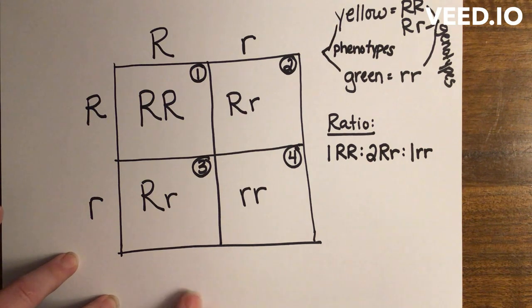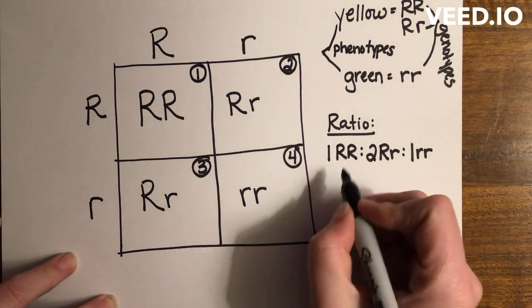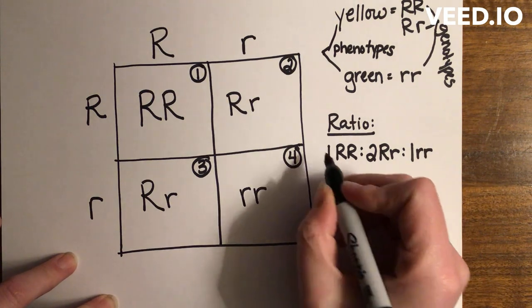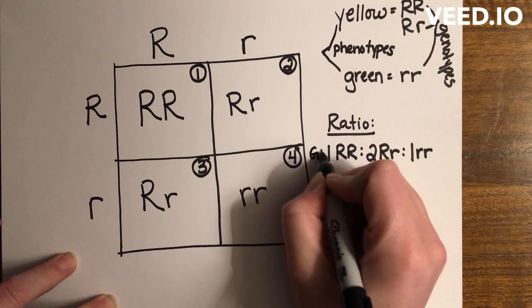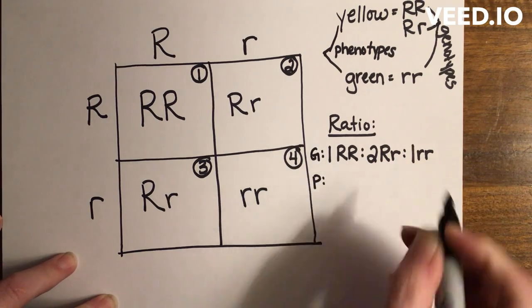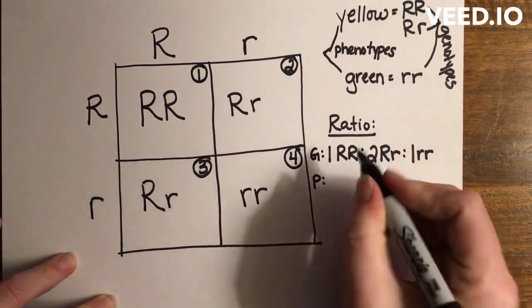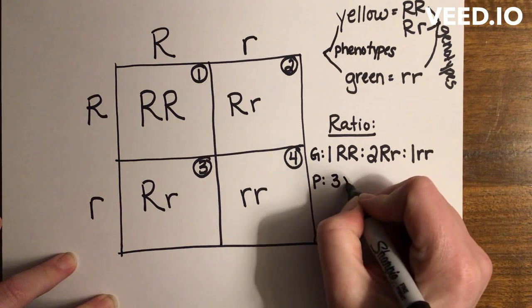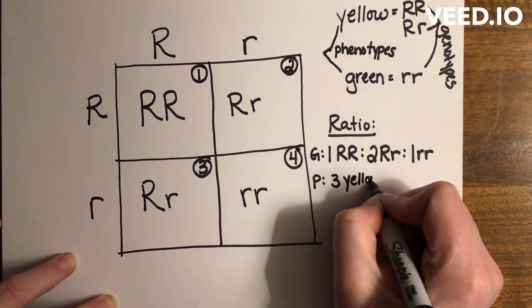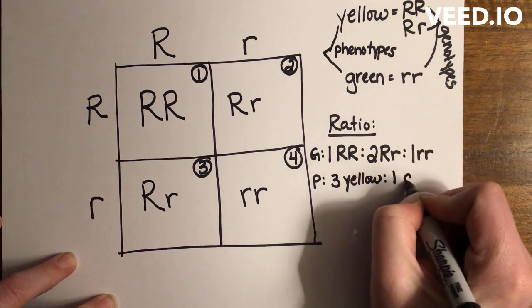If I wanted the ratio of the phenotypes—because remember, this is your genotype—if I wanted the ratio of the phenotypes, I would write three yellow and one green.